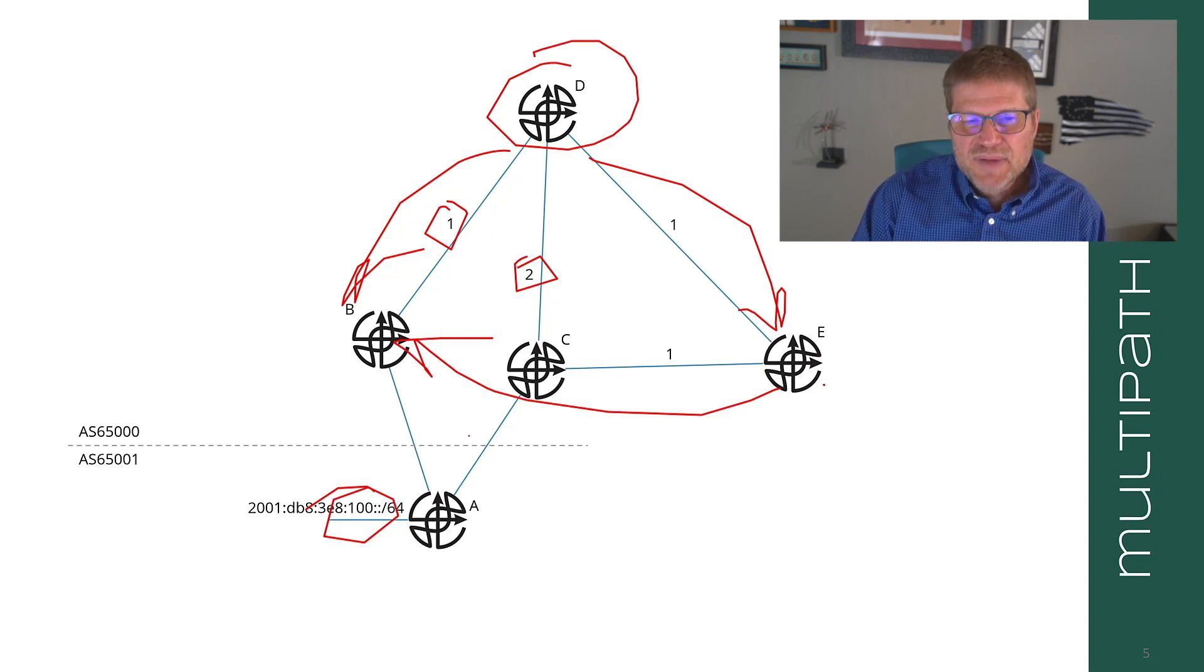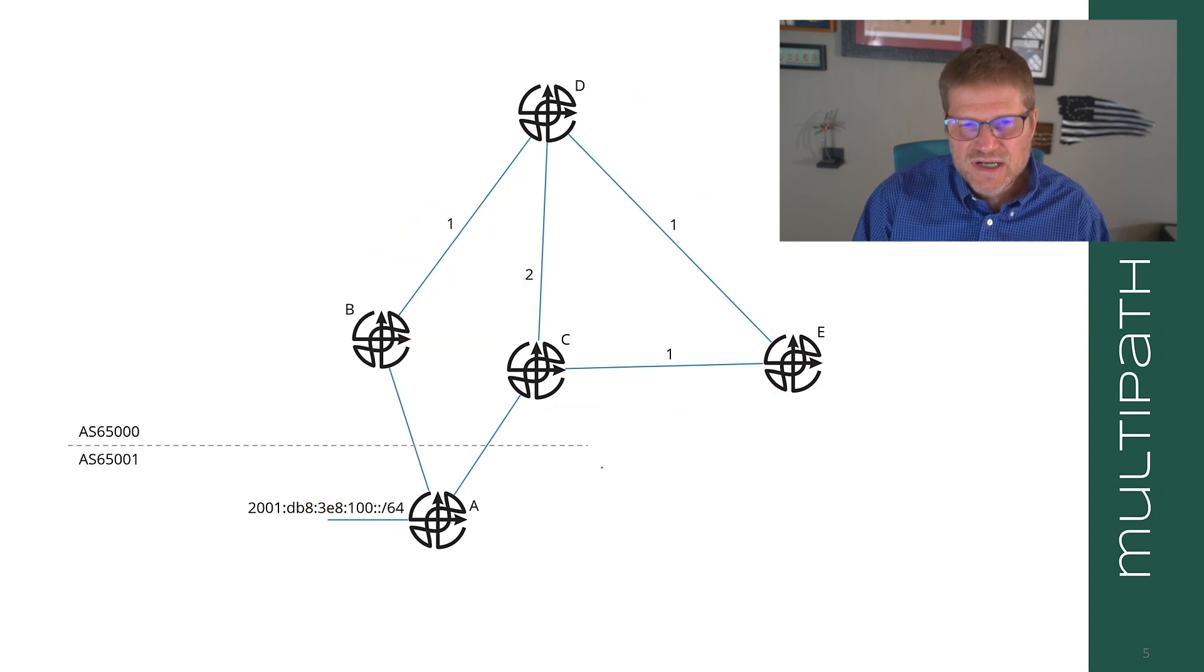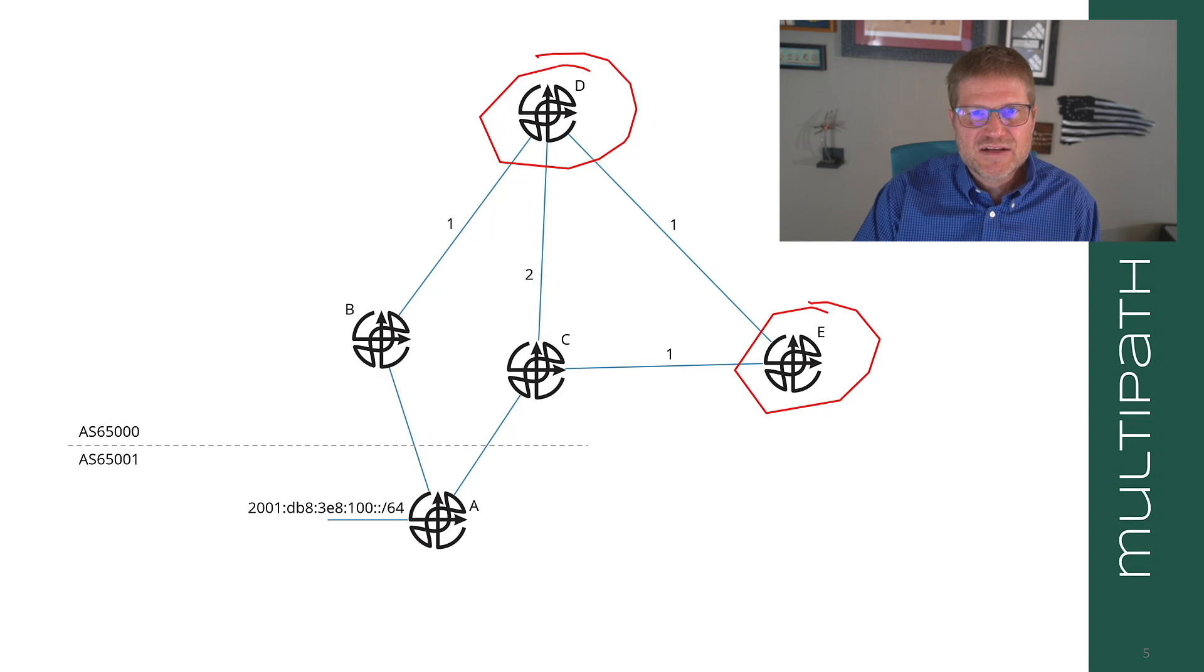Well there are a couple of ways I can do this. The first is at D, I can calculate the best path from each of my client's perspectives. So I can calculate the best path from E's perspective instead of my own perspective. And once I do that, I know which path to send to E because E has this other path to C right here.